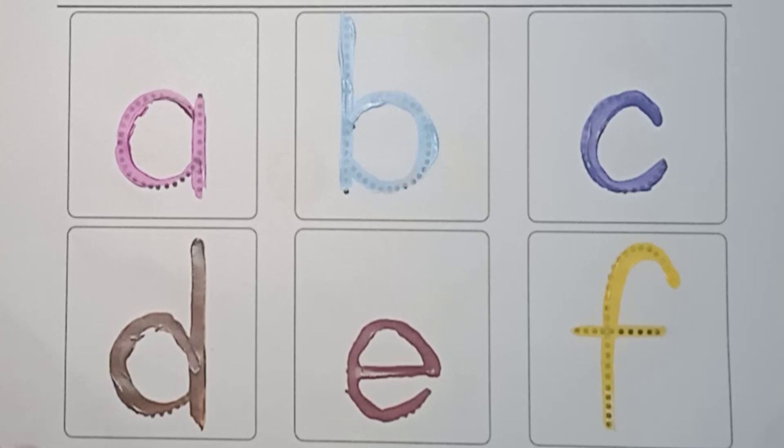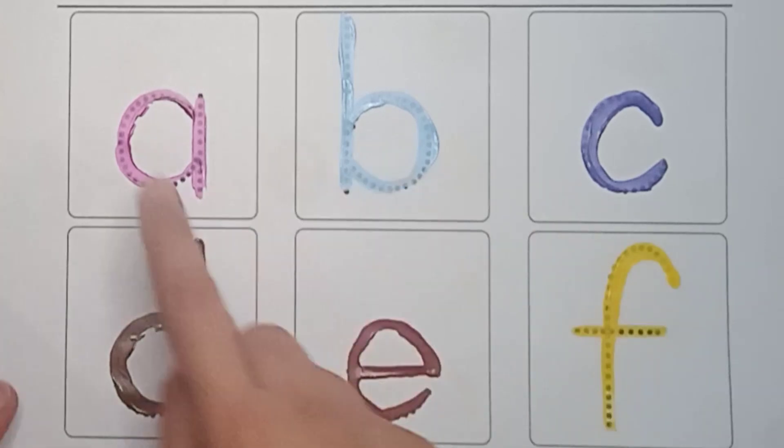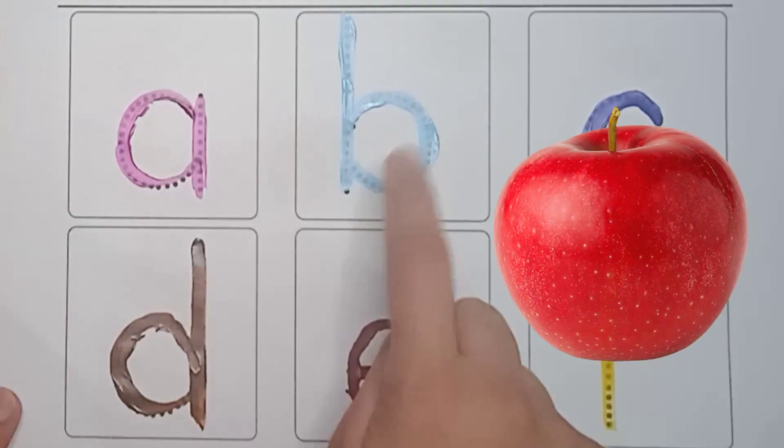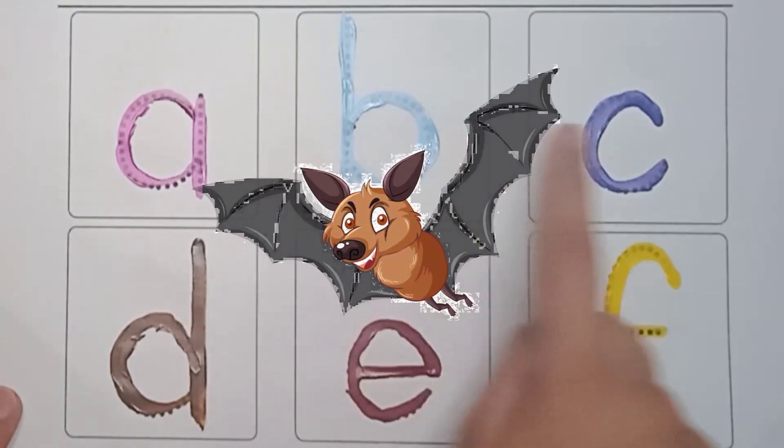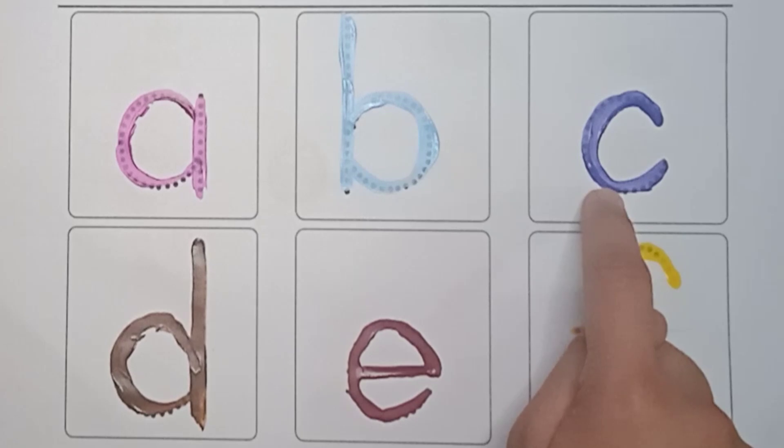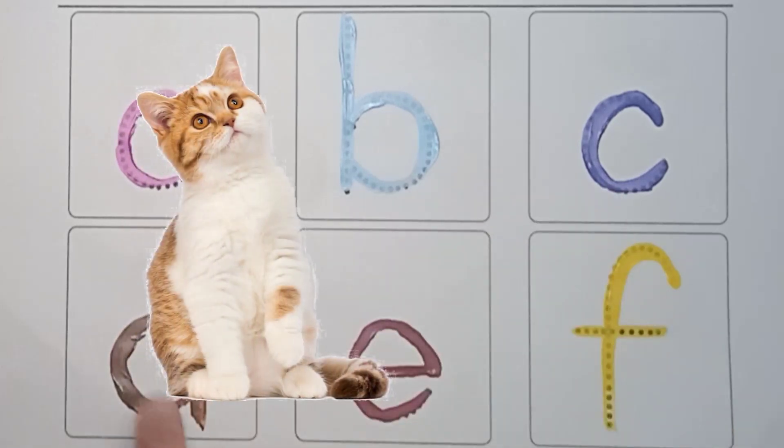So kids, do you remember yesterday we learnt about A to F? Let's revise first these. A. A is for Apple. B. B is for Bat. C. C is for Cat.